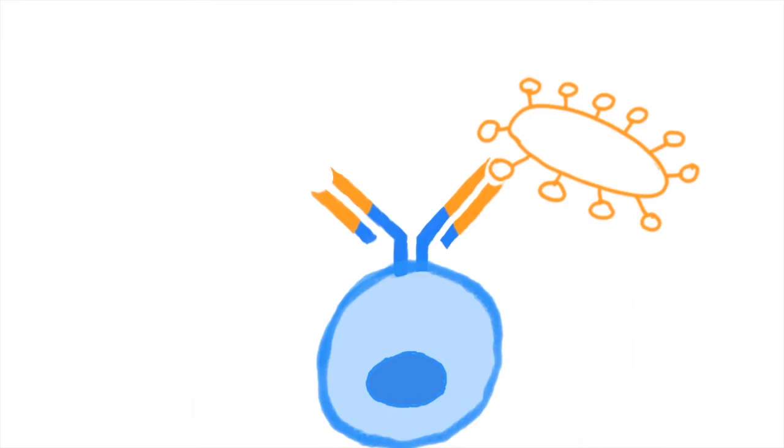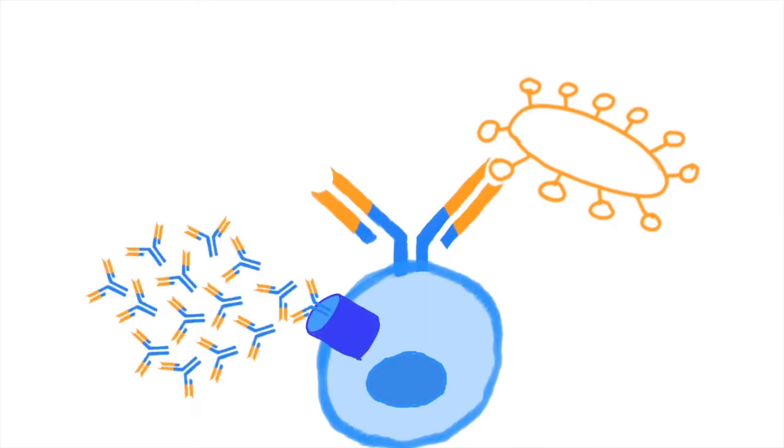If the B cell finds that antigen in the presence of other danger signals from the body, it produces thousands of antibodies in response. These antibodies then enter circulation, neutralizing the antigen wherever it is encountered.